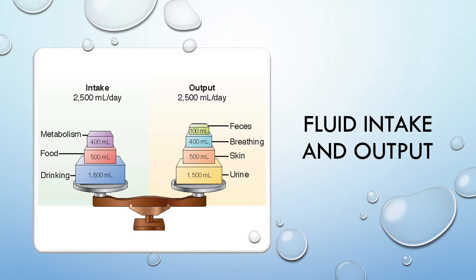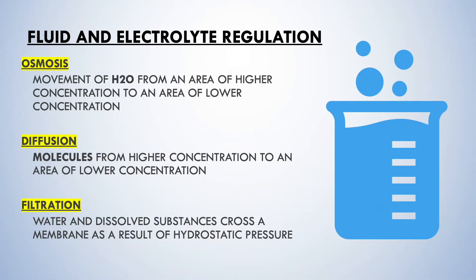Our fluid balance is regulated by fluid intake and output, and they should be equal. There is an average of about 2,500 milliliters of fluid processed daily. We intake fluids through eating, drinking, and cellular respiration — the process by which ATP is made, with water as a byproduct. Output of fluid occurs via urine, stool, sweat, and expiration. Fluid usually moves down its pressure gradient from a higher concentration to a lower concentration.